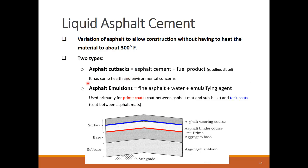These days, asphalt emulsions have been used instead of fuel products to lubricate the mix. Emulsified asphalt is made by adding water and an emulsifying agent to the asphalt cement. The agent is a soap-like material that keeps the asphalt cement particles suspended in the water. The liquid asphalt is applied in two coats at different locations within the pavement section. The prime coat is sprayed on the aggregate base before laying the asphalt binder course, while the tack coat is applied between the asphalt binder and wearing courses.